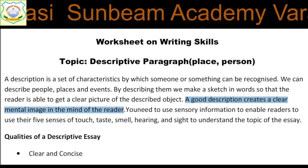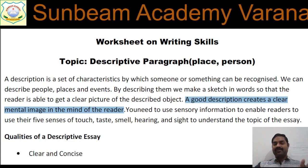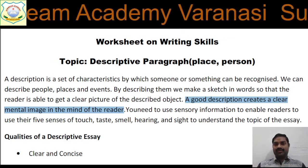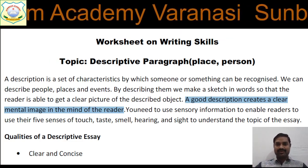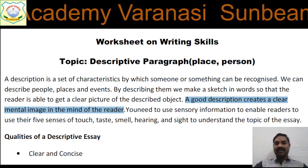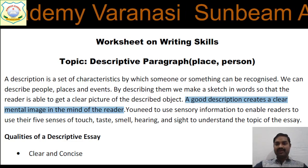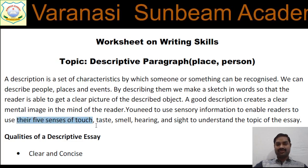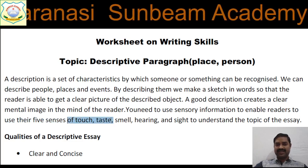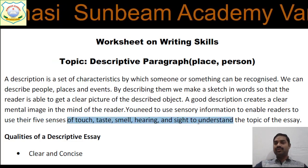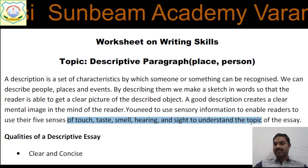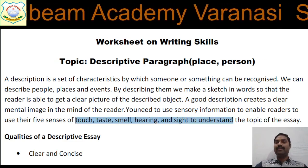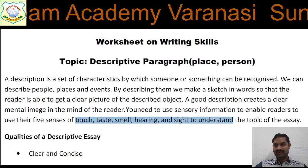If you have followed the guidelines for descriptive writing, it will make a clear picture for the reader about whatever you are talking about. For this, you need to use sensory information — to enable readers to use their five senses: touch, taste, smell, hearing, and sight — to understand the topic of the essay. These are the most important aspects you can highlight to make people understand what you are talking about.